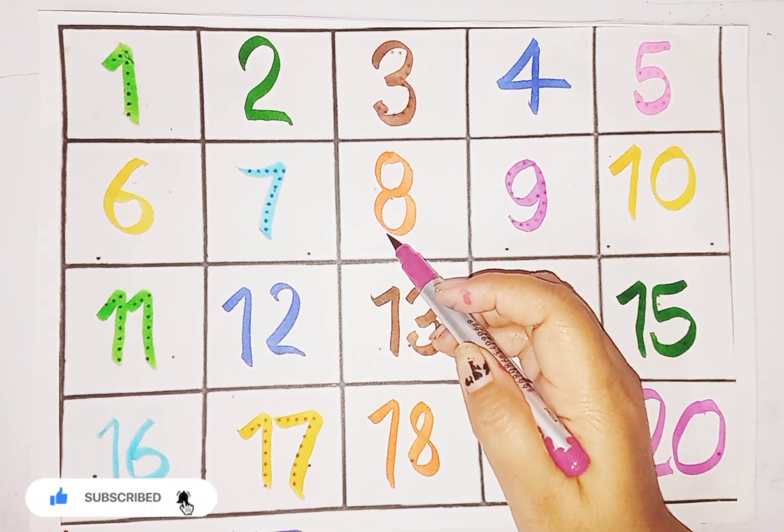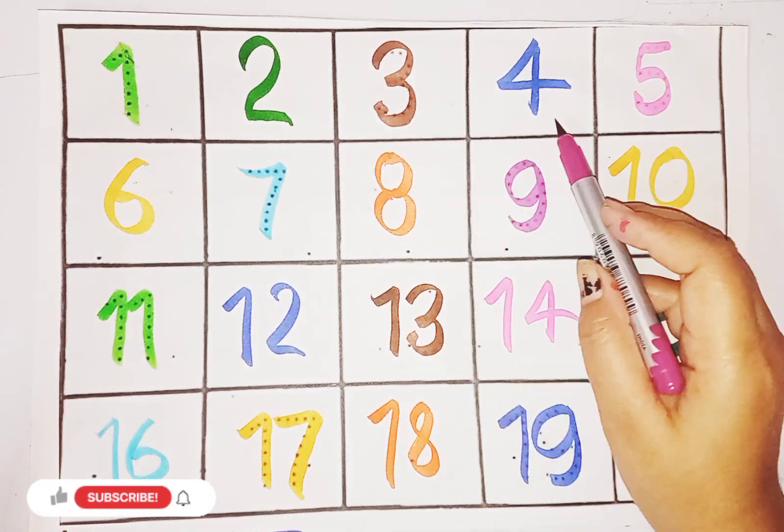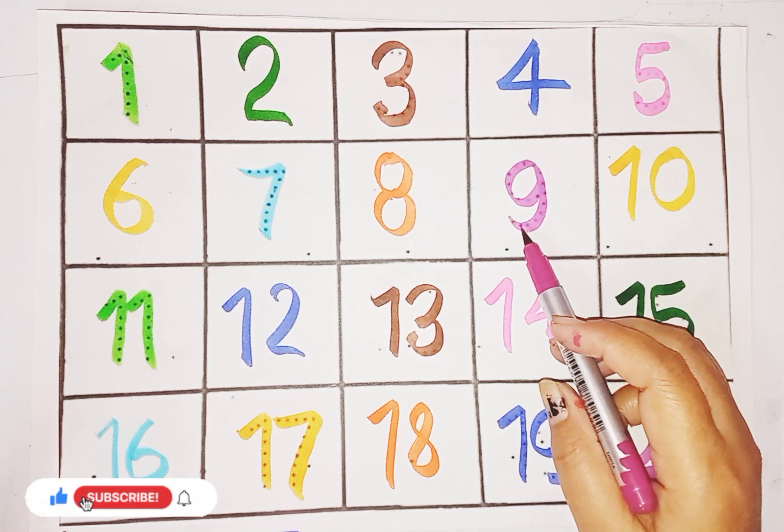So kids, today we learned missing counting, 1 to 20. 1, 2, 3, 4, 5, 6, 7, 8, 9, 10.